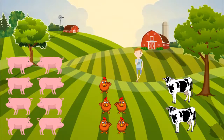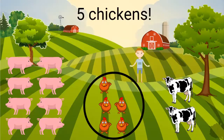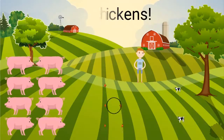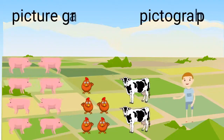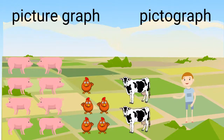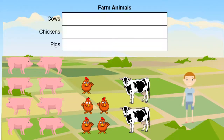Now we can count how many chickens my friend has. How many chickens does she have? Yes, she has five chickens. We can show how these animals are grouped in other ways. I'll meet you at my friend's pasture — we will take these animals and make a picture graph. Another word for this is a pictograph.